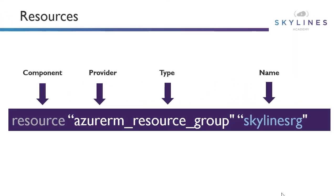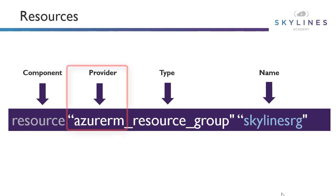Moving on to resources — this is where we actually define the objects that we want to create in our environment. It helps to understand the syntax these are created in. We have our component that we're declaring; if we were talking about a provider we'd say 'provider' up front, but here we want to build a resource so we say 'resource'. Then we reference the provider that's going to provide it — in this case Azure RM, since we're using the ARM series of Azure and no one's really using classic anymore.